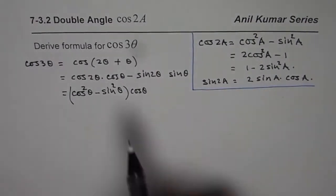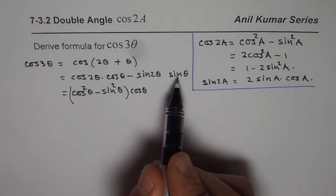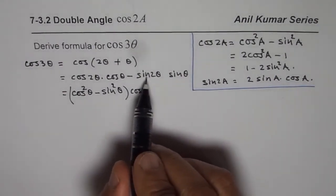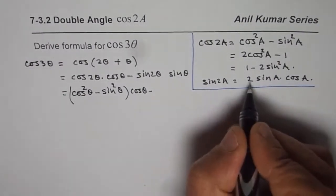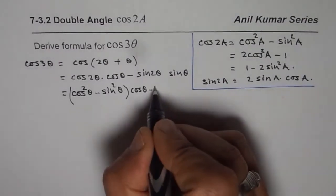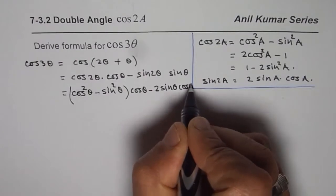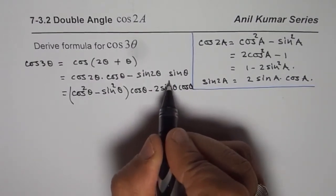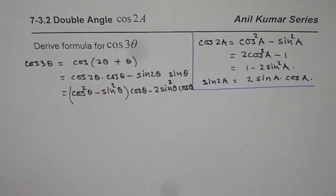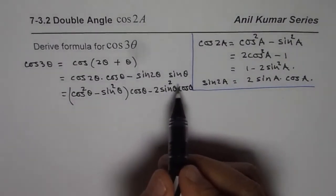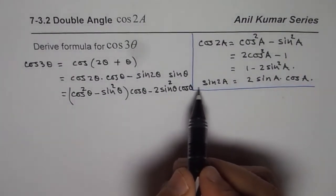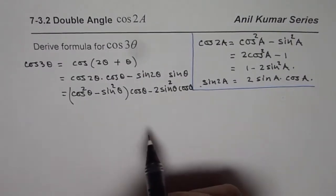So here we have minus sine 2 theta sine theta and for sine 2 theta we have 2 sine theta cos theta. So we have 2 sine theta cos theta and we multiply by sine theta this becomes square. So I ran out of space, you understand. So 2 sine theta cos theta times sine theta, I made it square.